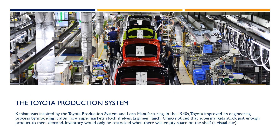Kanban was inspired by the Toyota production system and lean manufacturing. In the 1940s, Toyota improved its engineering process by modeling it after how supermarkets stock shelves. Engineer Taichi Ono noticed that supermarkets stock just enough product to meet demand. Inventory would only be restocked when there was empty space on the shelf — a visual cue.